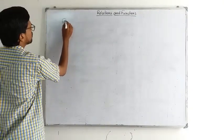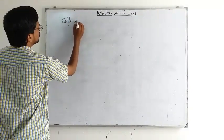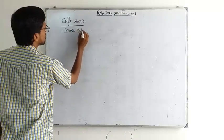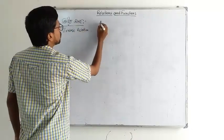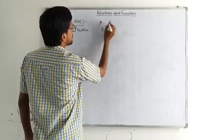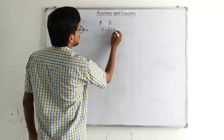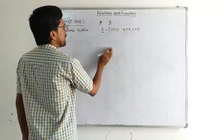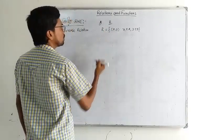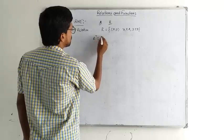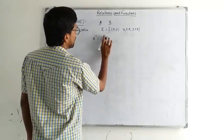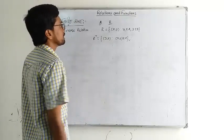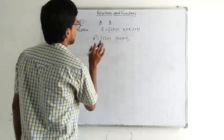The domain of the inverse relation: the R inverse relation is defined as the set of (y, x) such that (x, y) belongs to R. So R inverse is a subset of B cross A.